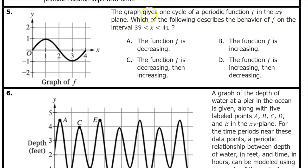Number 5. The graph gives one cycle of a periodic function f in the xy plane. Which of the following describes the behavior of f on the interval from 39 to 41? Our strategy is to find the period of f, and then use the period to find a corresponding interval on this graph that will have the same behavior as the interval from 39 to 41. Only one interval of the graph is shown, so it's easy to see that the period is 4.